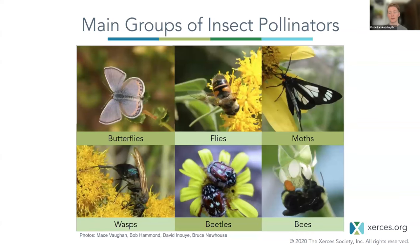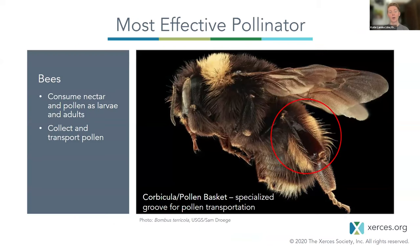Our main groups of insect pollinators include butterflies, flies, moths, wasps, beetles, and bees — but bees are the most efficient pollinators. They are the only insect to consume both nectar and pollen as adults and larvae throughout their entire life cycle, making them truly dependent on floral resources. Because of this, bees have evolved remarkable physical structures that allow them to collect and transport pollen efficiently.